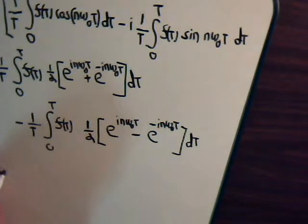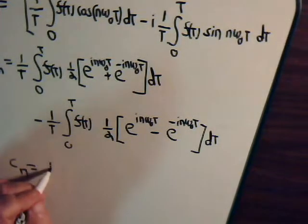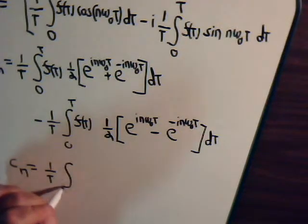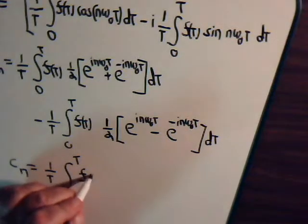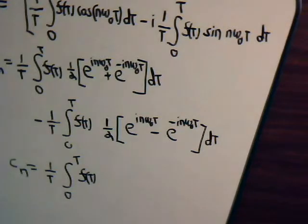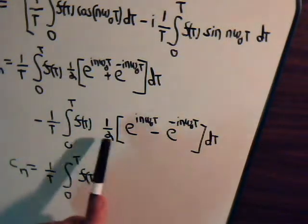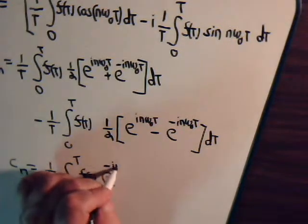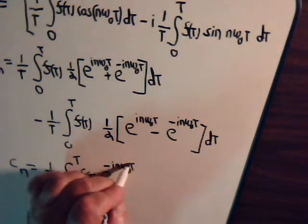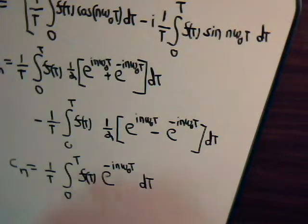That will equal one over T, the integral from zero to T, f of t, we're here now, we have one half plus one half, so that will be times e to the minus i n omega t, dt. So there is our formula for c sub n, and actually, as you can see, it can take too much work to get that.